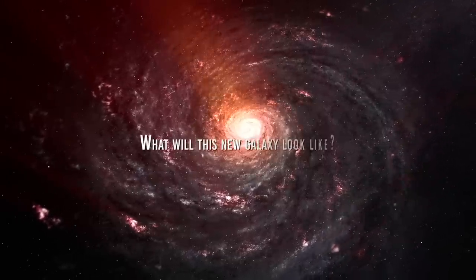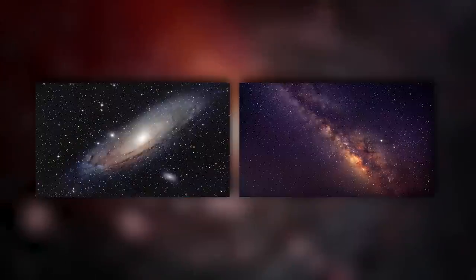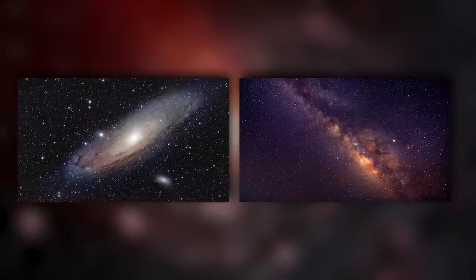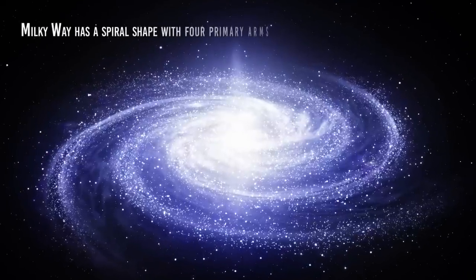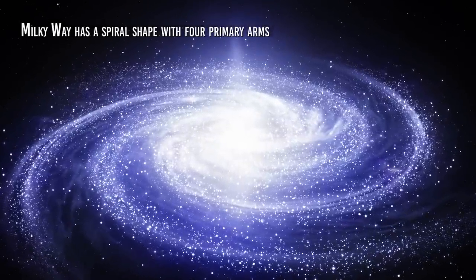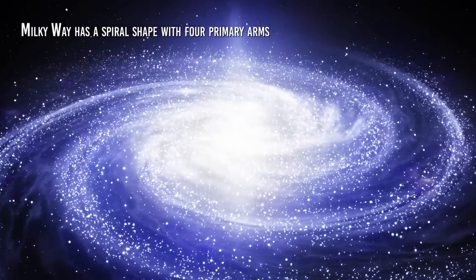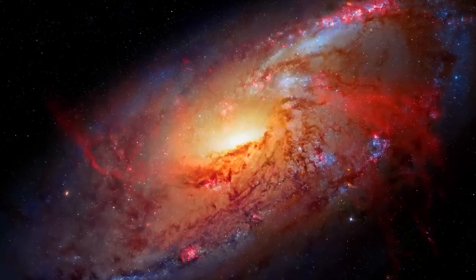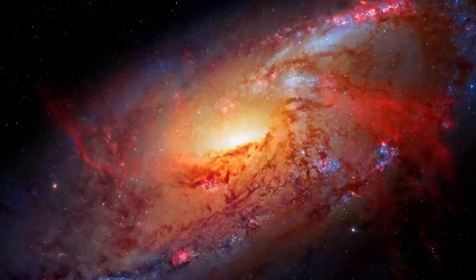The Milky Way will look very different as the merger with the Andromeda Galaxy approaches. Currently, the Milky Way has a spiral shape with four primary arms. However, as it merges with the Andromeda Galaxy, the resulting new galaxy will have an oval shape, with many stars orbiting the galaxy's center. The spiral arms of the Milky Way will deform and mix with the spiral arms of the Andromeda Galaxy, giving rise to a new galactic structure.